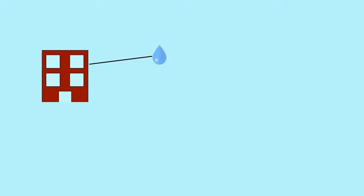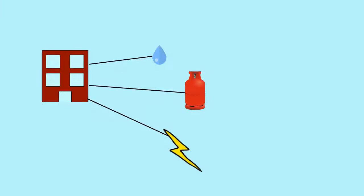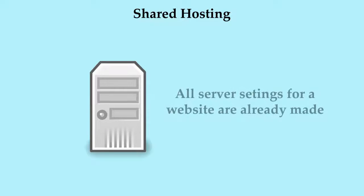In apartments, all connections like water connection, gas connection, and electricity are already made — you just need to go and live there. Likewise, in shared hosting, all server configurations are already made; you just need to put your website and focus on developing it.